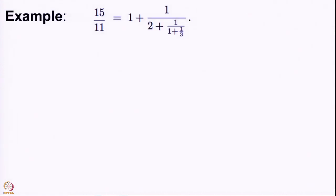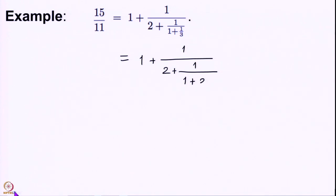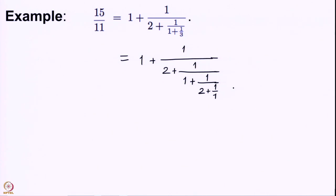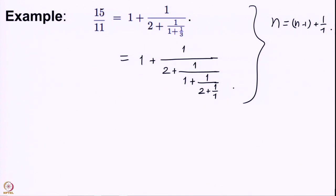We also saw an example in the last lecture that 15/11 can be written as a continued fraction. Moreover, this expression is not quite unique — the last integer 3 can also be written as 1/2 plus 1/1. So we have some non-uniqueness whenever rational numbers are involved. But the non-uniqueness only means the last term n can be written as n minus 1 plus 1/1; otherwise the representation is essentially unique.